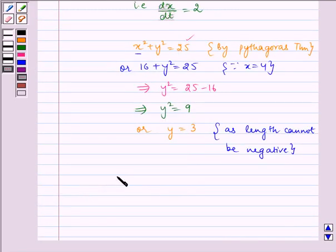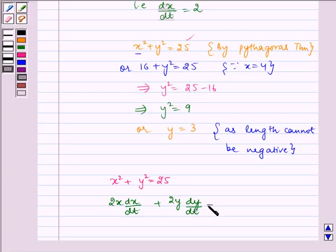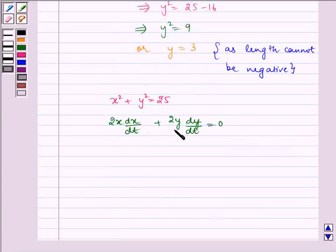Again, we write x² + y² = 25. Now, differentiating with respect to t, we get 2x(dx/dt) + 2y(dy/dt) = 0. Taking 2 as common, we get x(dx/dt) + y(dy/dt) = 0.